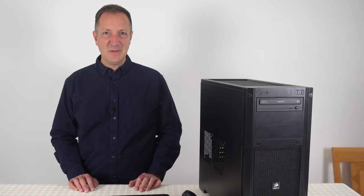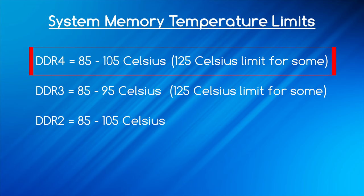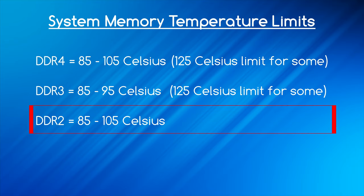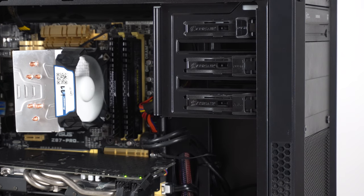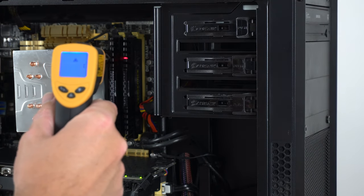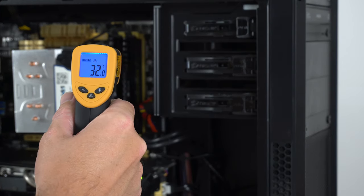Now for the system memory: the temperature limit for DDR4 is often between 85 and 105 degrees Celsius, though some can handle higher temperatures. For DDR3 it's normally 85 to 95, and for DDR2 the maximum temperatures are usually between 85 and 105 Celsius. It's not easy to see your memory's temperature using software, so if you want to know how hot your memory is you could use an infrared thermometer. Links in the description if you want to check it out.